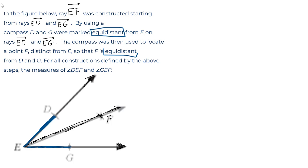F is also equidistant, the same distance from D and G. Let's write that out. The distance from F to D and the distance from F to G are also the same.